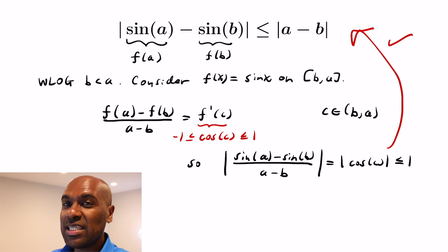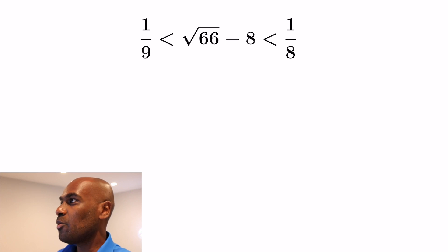Now we're going to move on to see a different application where we use the mean value theorem to actually estimate differences of numerical values without having to use the calculator whatsoever. What we're going to do is show that √66 - 8 is strictly between 1/9 and 1/8. Now you can actually do things like rationalize the expression that we have to get this but we're going to see how the mean value theorem can give it to us.